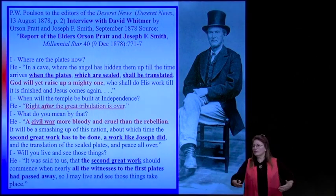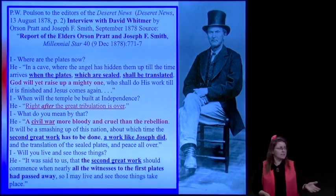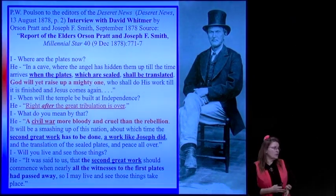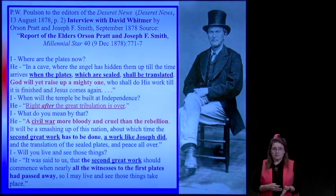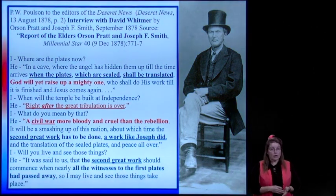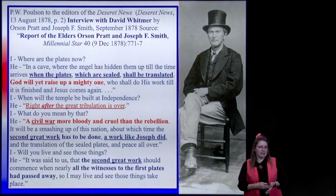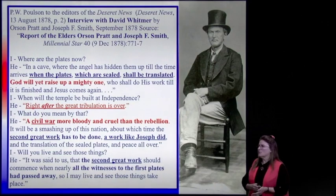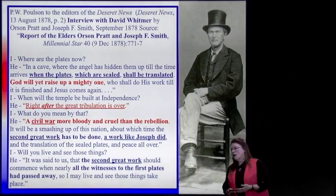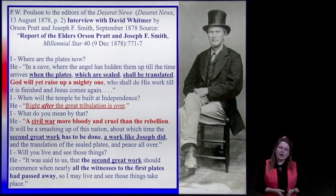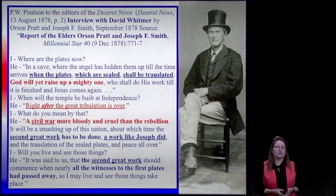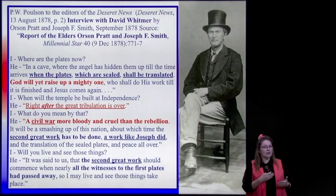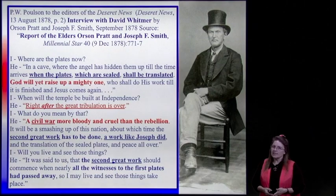Just in case we think we're referring to the Civil War in the 1860s when talking about Egyptians fighting brother against brother and state against state—this is an interview published in the Millennial Star and reported in the Deseret News in 1878, over 10 years after the Civil War. David Whitmer is being interviewed by Orson Pratt and Joseph F. Smith about the sealed portion of the Book of Mormon. He says: 'In a cave where the angel has hidden them up, until the time arrives when the plates which are sealed shall be translated.'